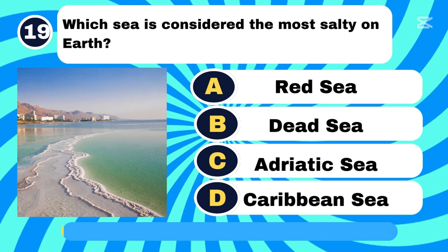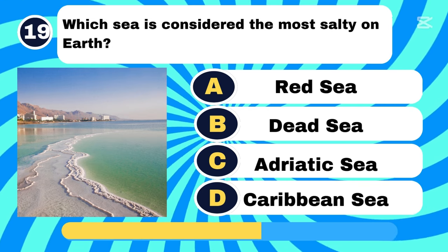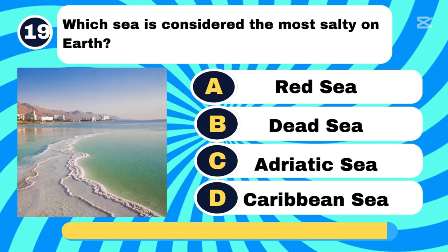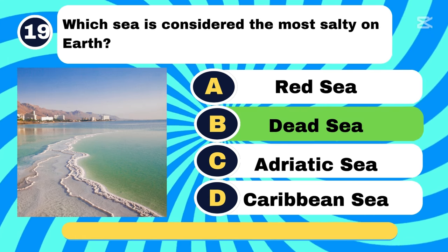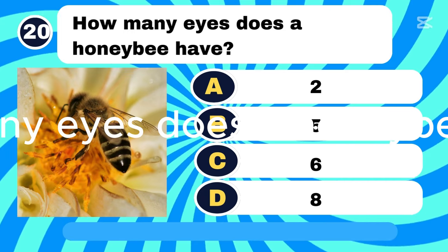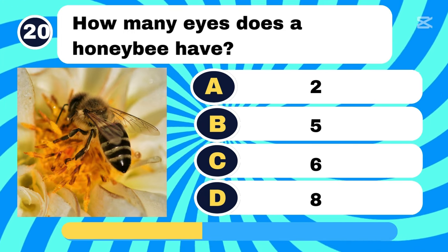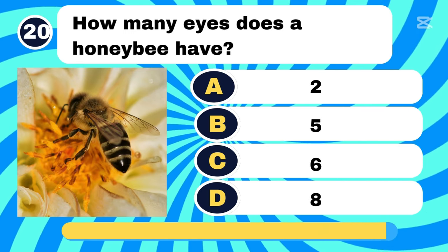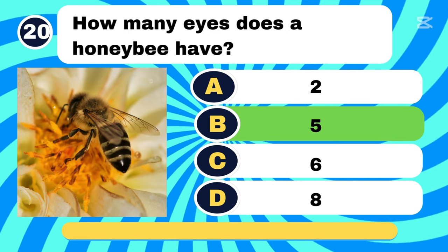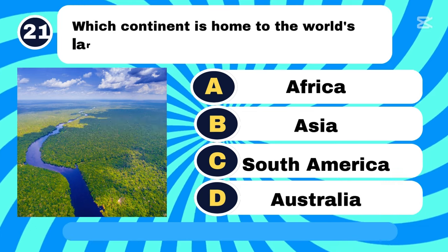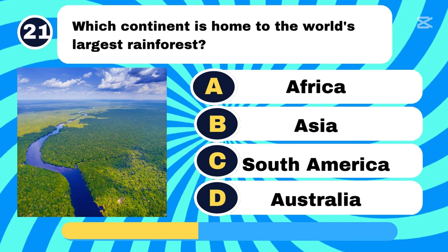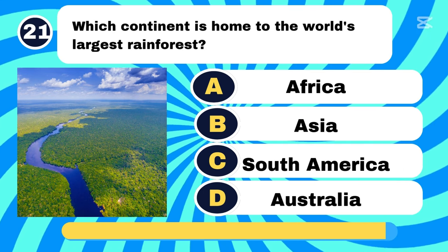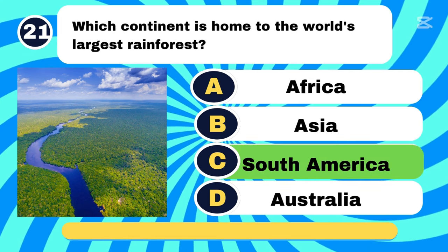Which sea is considered the most salty on Earth? Letter B, Dead Sea. How many eyes does a honeybee have? Letter B. Which continent is home to the world's largest rainforest? Letter C, South America.